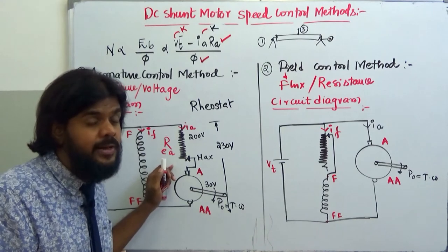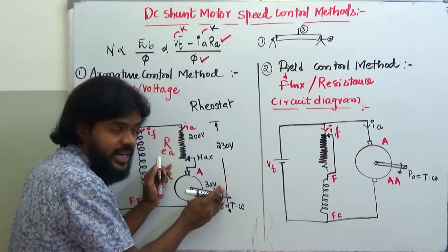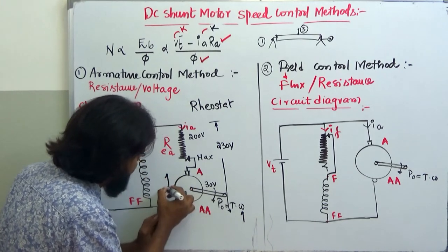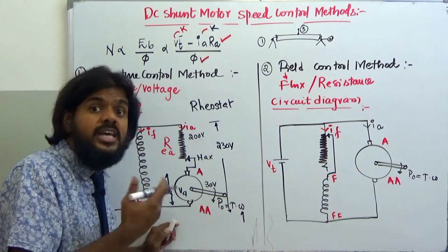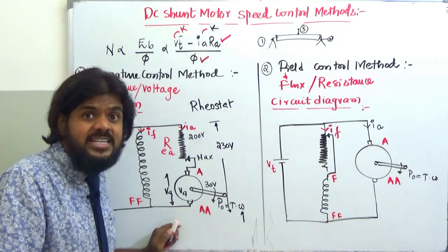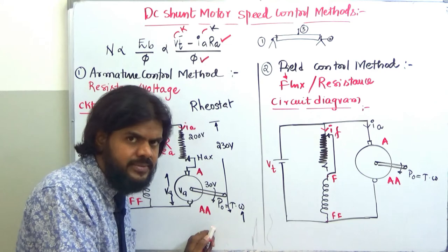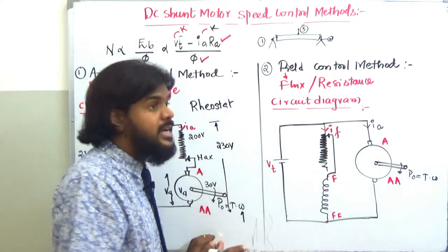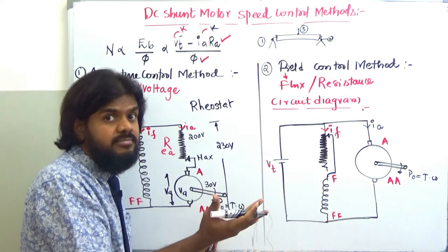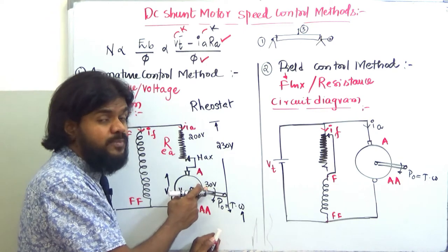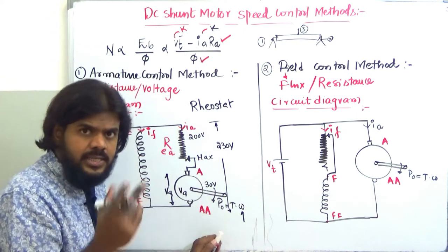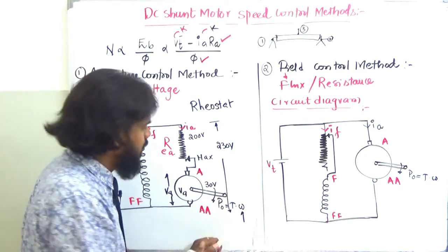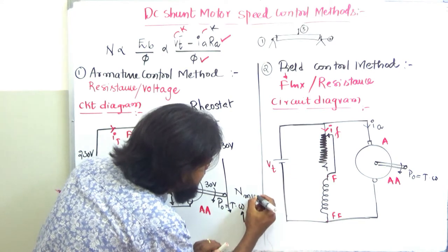So the armature voltage Va is very low. If you kept a very high resistance value there, the voltage drop across it could be 230 V and the voltage at the armature would be zero — meaning the output speed would be zero. So the motor starts at a very minimum speed in this configuration.